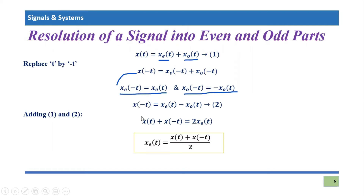If we simplify further, it will become: x_e(t) = [x(t) + x(-t)] / 2. This is basically the average of the original signal plus its time reversal, and that equals the even part of the signal.